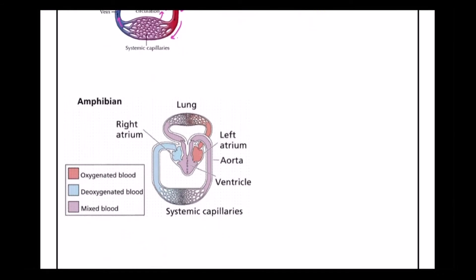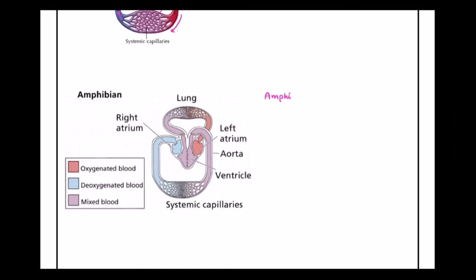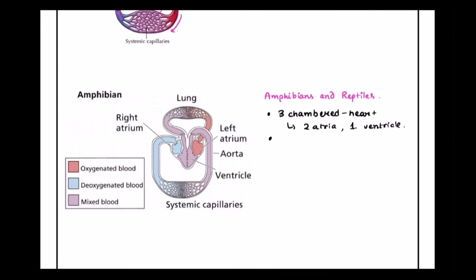Moving on to amphibians and reptiles — we'll discuss them simultaneously. All amphibians and reptiles have a three-chambered heart, meaning two atria and a single ventricle. There is an exception in reptiles: crocodiles have a four-chambered heart, with two atria and two ventricles.